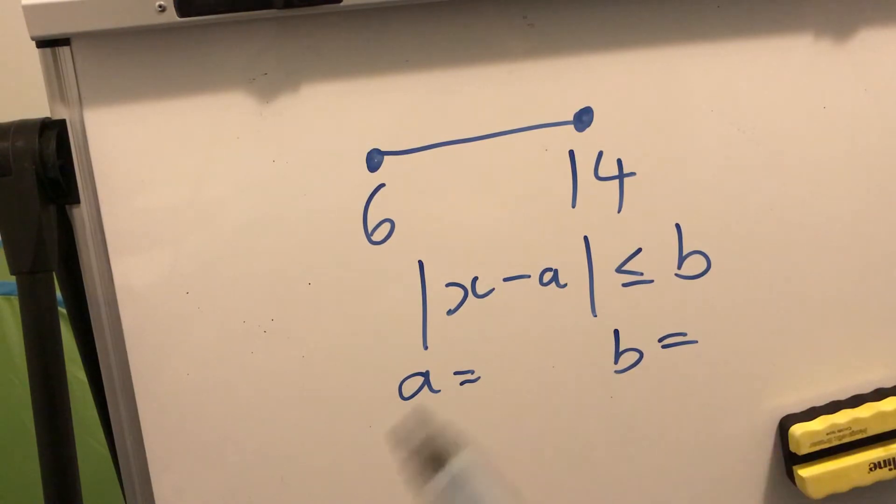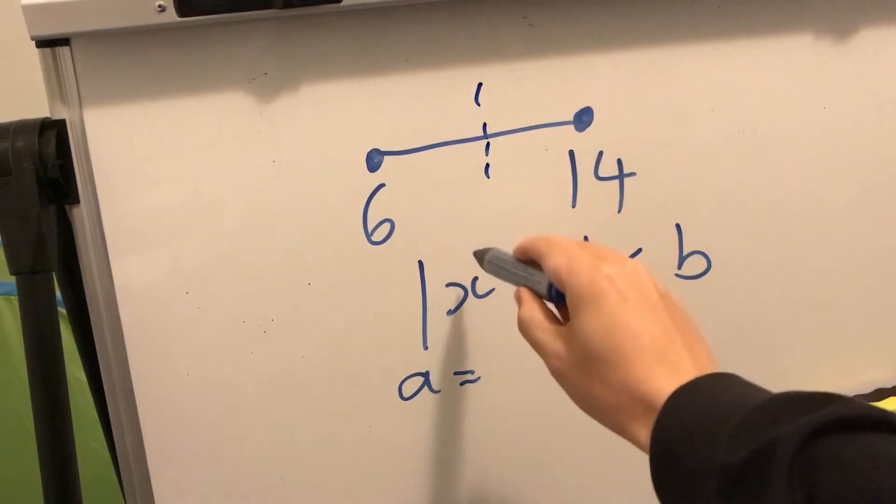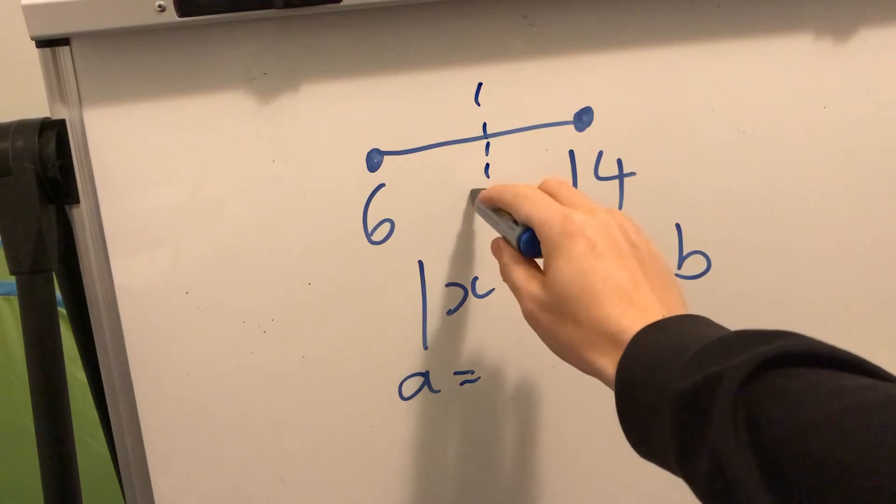So since that distance on the right and distance on the left is all the same, then A must be actually the middle of 6 and 14, which is 10.